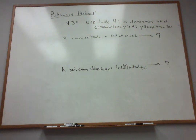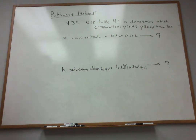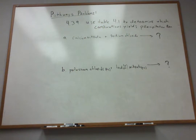This is Pathways 4.39. Use Table 4.1 to determine which combinations yield a precipitation reaction. We're getting into predicting products of precipitation reactions with this one. The reactions are written out in words, and we've got to convert them to chemical equations, which is going to be one of our first things.